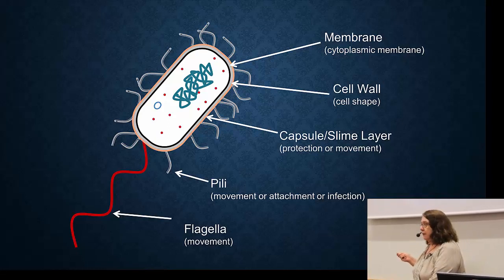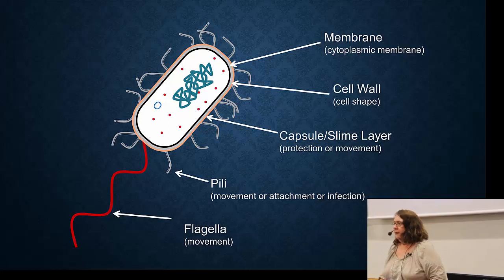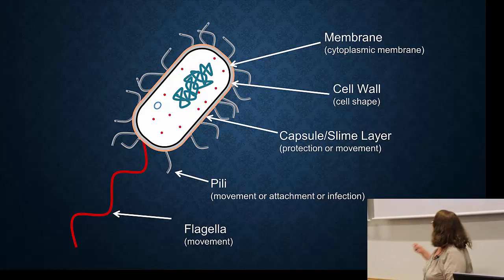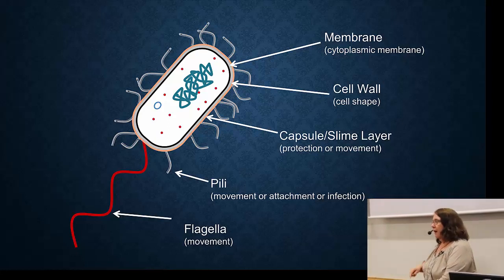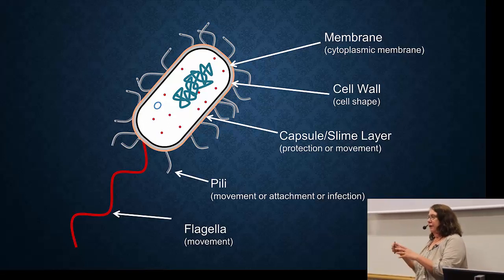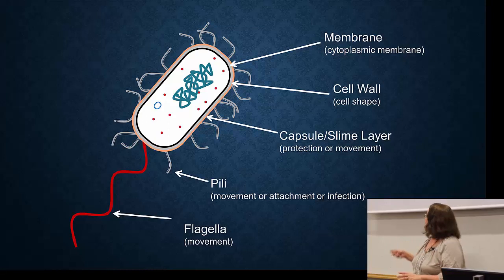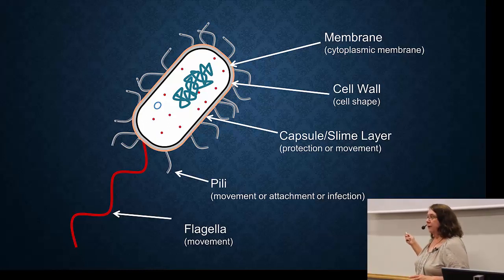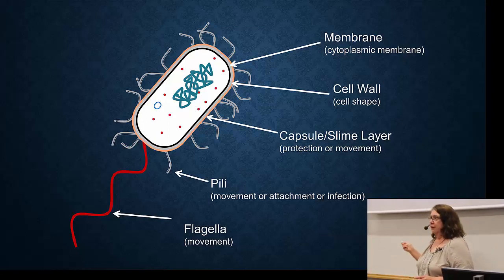Lastly, we have flagella — the classic way that bacteria move. Flagella are extremely long, and they spin around so that the bacteria can swim through liquid quite well and quite quickly. There are different types of flagella.